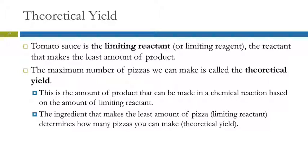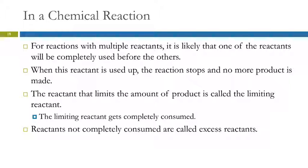The process here is that we take each ingredient and figure out how much product we could make. The answer to how much we can make is the smallest number. Because when we've hit that amount of product, we've run out of that ingredient, so it doesn't matter that there's extra stuff left over. Here it is in picture form: four crusts make four pizzas, ten cups of cheese make five pizzas, fifteen ounces of sauce makes three pizzas. This is the least amount of product — that's how much we can make. This is the ingredient that is limiting how many pizzas we could make, so we call this the limiting ingredient or the limiting reactant. And this is the yield — the theoretical yield.